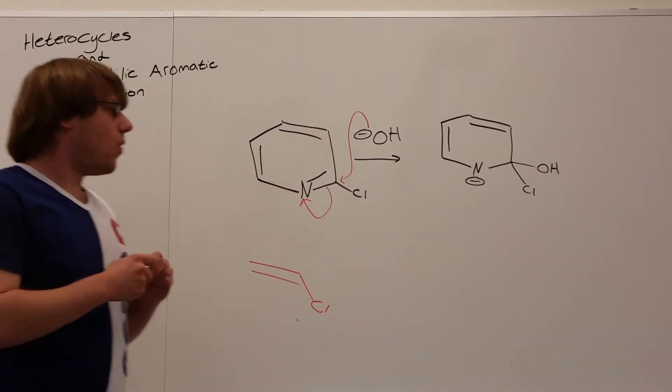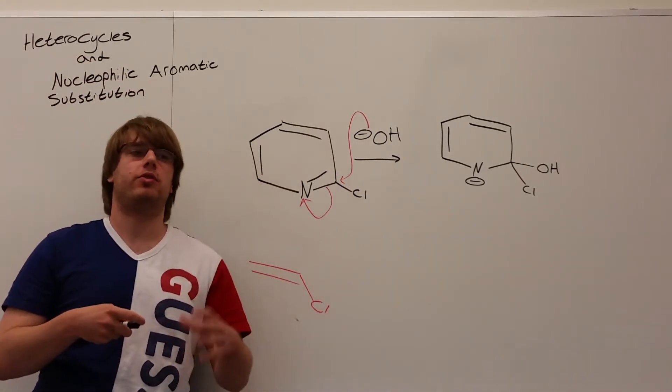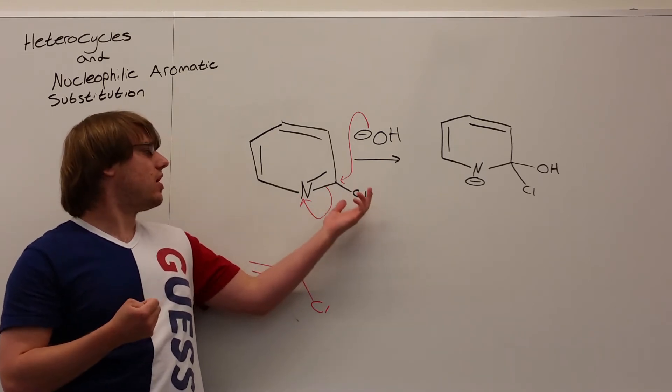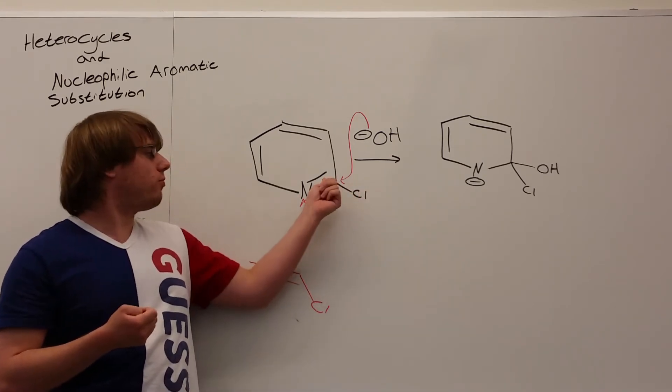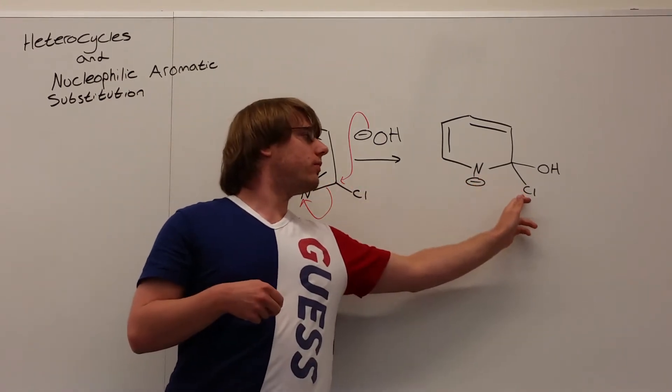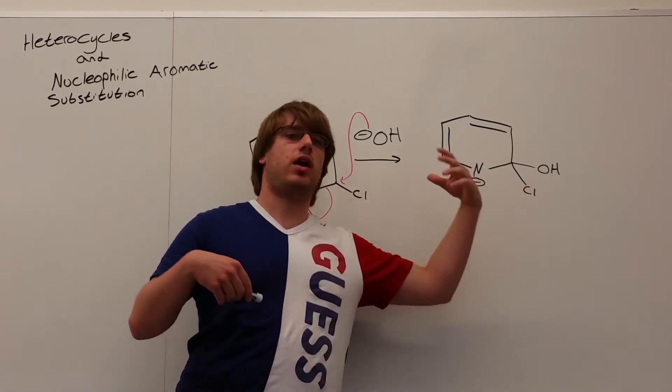Now why does this happen? Again, we can't just kick a leaving group off of a double bond like we've seen. The chlorine will not want to leave. The bond is too strong. But by resonating this double bond over to the nitrogen, this is no longer on a double bond, and so it's a lot easier to kick out.